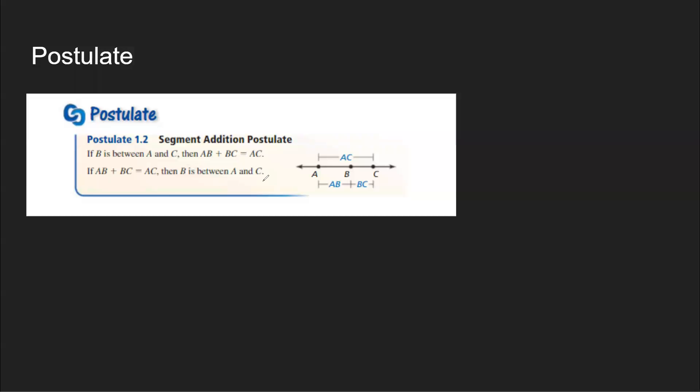Postulate 1.2 — Segment Addition Postulate: If B is between A and C, then AB plus BC is equal to AC. Conversely, if AB plus BC is equal to AC, then B is between A and C. So you can see that B is between A and C, and AB plus BC equals AC.